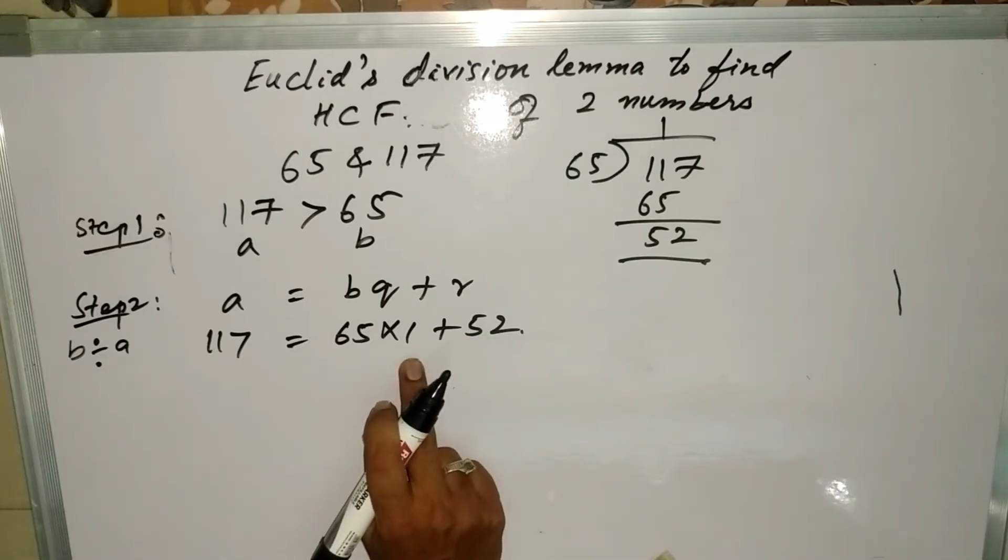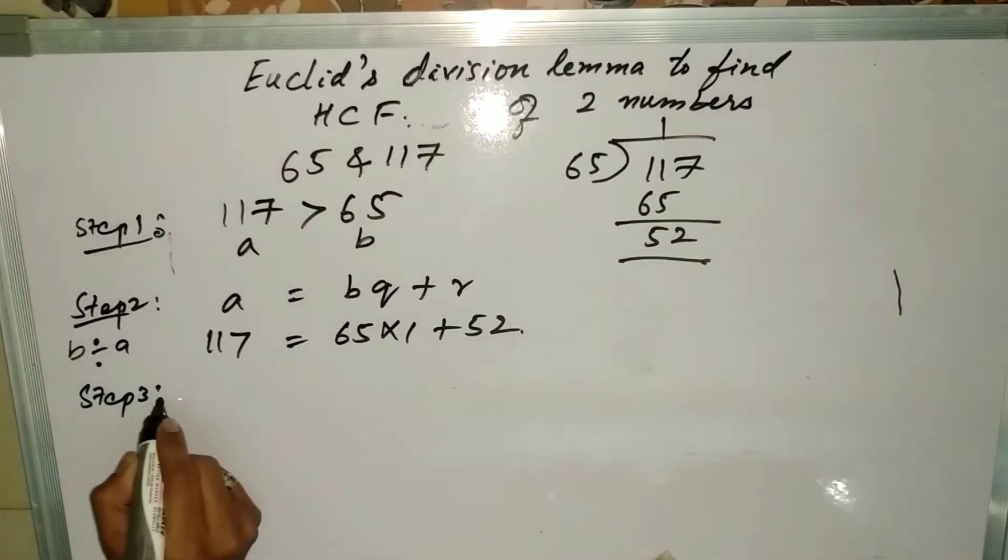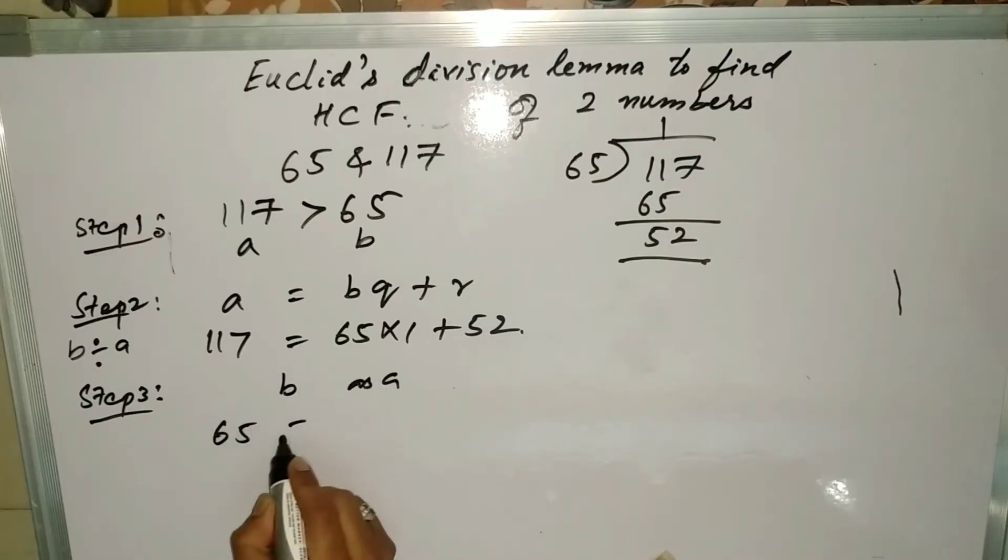Next step is you have to take b as a in step 3. So it will be 65 equals 52 times q plus r. Again you need to divide b by a.